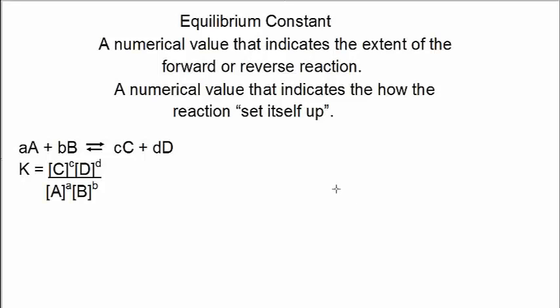Many chemical reactions are reversible, and it would be good to know the extent of the forward or reverse reaction. The equilibrium constant allows us to measure the extent of the forward or reverse reaction. Another way of defining the equilibrium constant is it's a numerical value that indicates how the reaction, quote, set itself up.